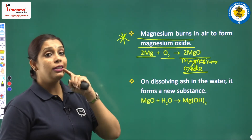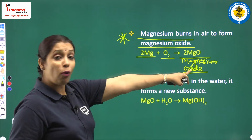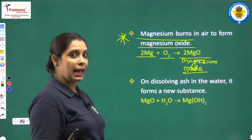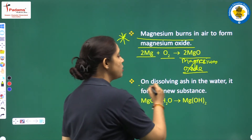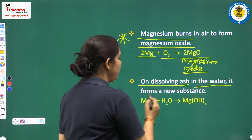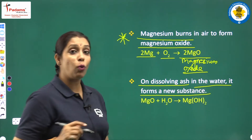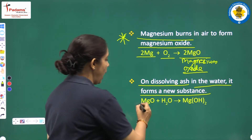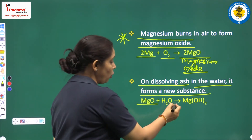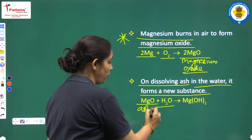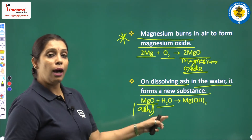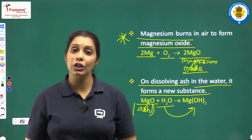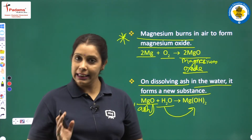When we dissolve this magnesium oxide in water, it gives a new substance. On dissolving the ash in water, it forms a new substance. Magnesium oxide ko humne water mein dissolve kiya — yeh humare paas powdery ash form mein tha. Humne isko water mein dissolve kiya, and finally we got magnesium hydroxide.